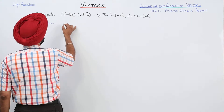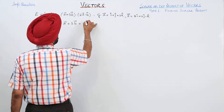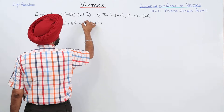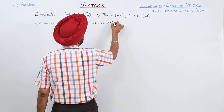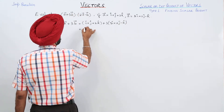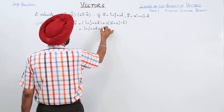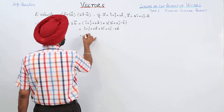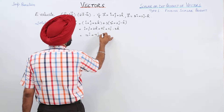Vector a + 3·vector b: vector a is i cap + j cap + 2k cap, plus 3 times vector b which is 3i cap + 2j cap − k cap. This becomes i cap + j cap + 2k cap + 9i cap + 6j cap − 3k cap, which equals 10i cap + 7j cap − k cap.